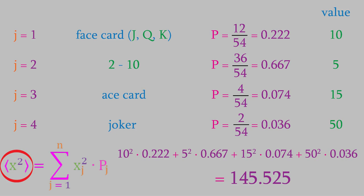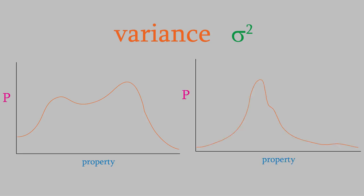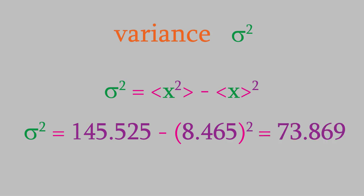There's one other calculation related to probabilities that we'll want to know about. The variance of a quantity is related to the standard deviation, and it's indicated with the symbol lowercase sigma squared. It gives us a sense of how wide the distribution of the values is. The smaller the variance, the narrower the distribution. The variance of x is equal to the expectation value of x squared minus the square of the expectation value of x. Let's calculate the variance for the dataset we've been looking at. We already calculated the expectation value of x squared, which is 145.525. From that, we subtract the square of 8.465, the expectation value of x. That gives us a variance of 73.869.